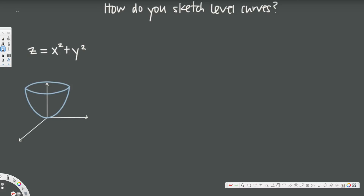In this video we are going to see how to draw level sketches for multivariable functions. Here we have a paraboloid as an example. To confirm it's a multivariable function, we check for a z-axis — we have z = x² + y², so this is definitely a multivariable function. This equation describes a paraboloid, which in 3D looks like a bowl shape.